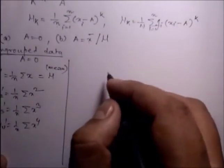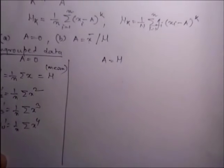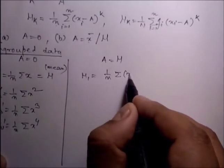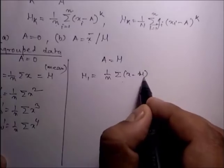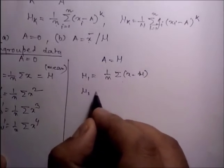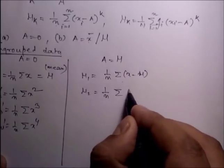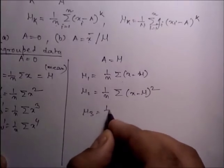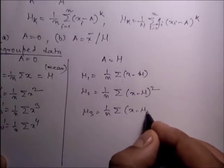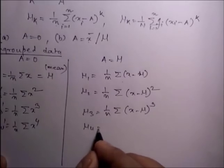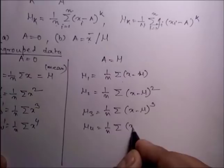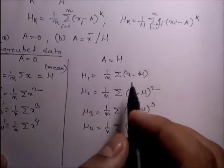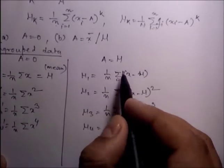When a equals the mean, the moments about the mean are: the first moment = (1/n) summation of (x minus mu); the second moment = (1/n) summation of (x minus mu) squared. Here we write the summation from i equals 1 to n in each and every moment.